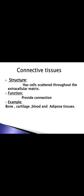Connective tissue — from its name it is clear what it does: connection. First we will see its structure, then its function. Structure: it has cells scattered throughout the extracellular matrix. The cells of connective tissue are scattered, spread throughout the extracellular matrix. Function: it provides connection — between tissues or between body parts.